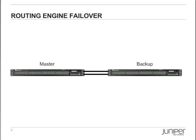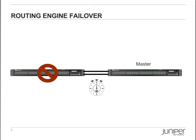EX8200 switches provide redundancy through redundant routing engines, while EX4200 switches provide redundancy by having redundant routing engines in a virtual chassis configuration. By itself, this redundancy is valuable because it can allow you to quickly recover from a failure of the primary routing engine. However, there is still a brief outage while the backup routing engine begins processing all the protocols, such as spanning tree and LACP, and begins forwarding traffic. Non-stop bridging makes routing engine redundancy even better by eliminating this failover time.